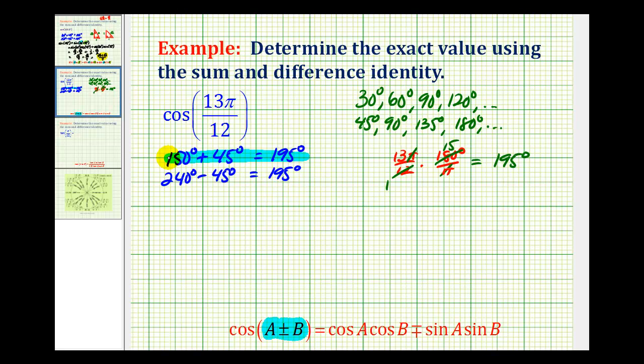So let's go ahead and use this first sum. If we start to write this out, cosine of 195 degrees equals cosine of 150 degrees plus 45 degrees. So if we stop here for a moment, this tells us that A equals 150 degrees and B equals 45 degrees.